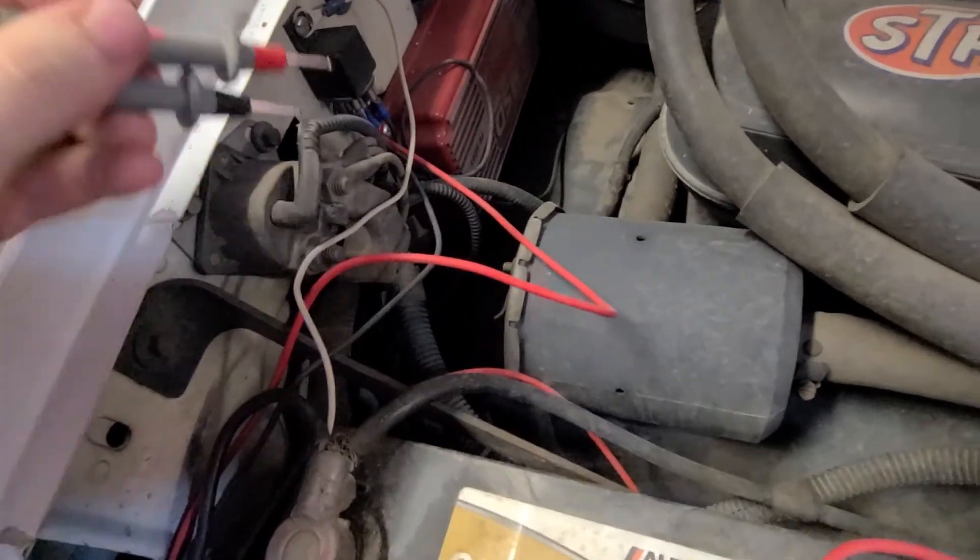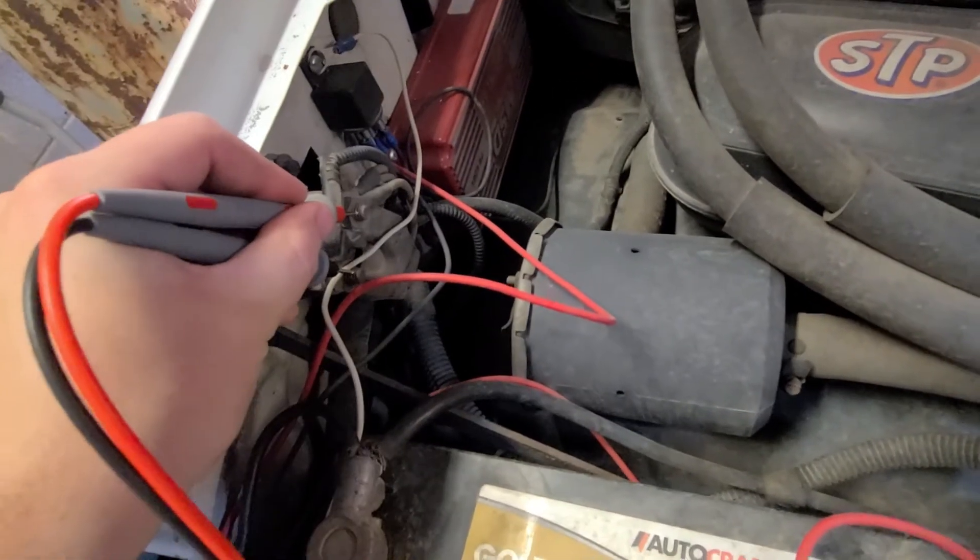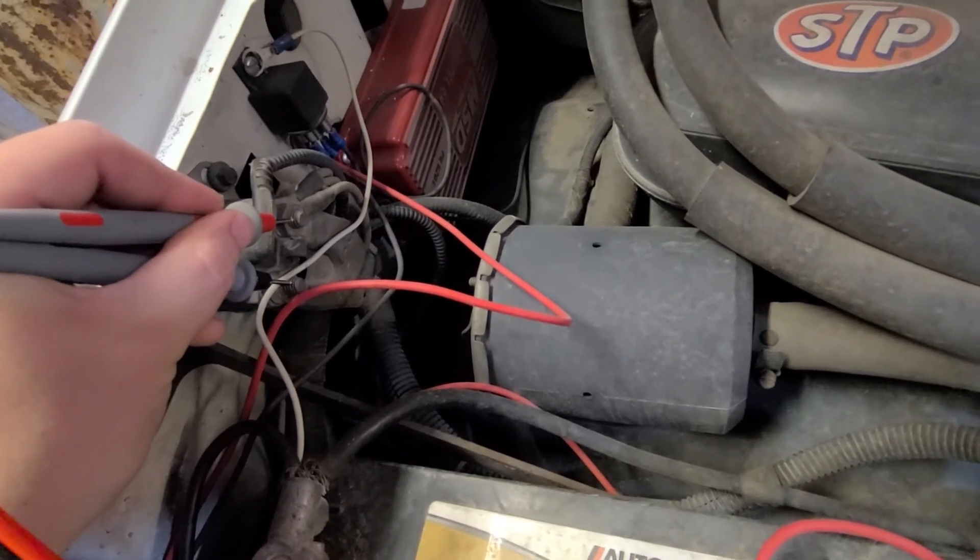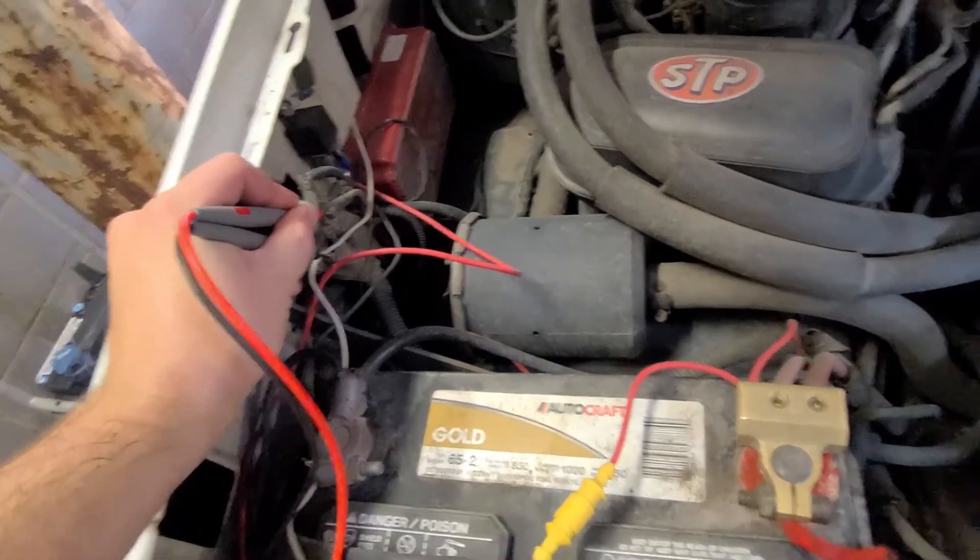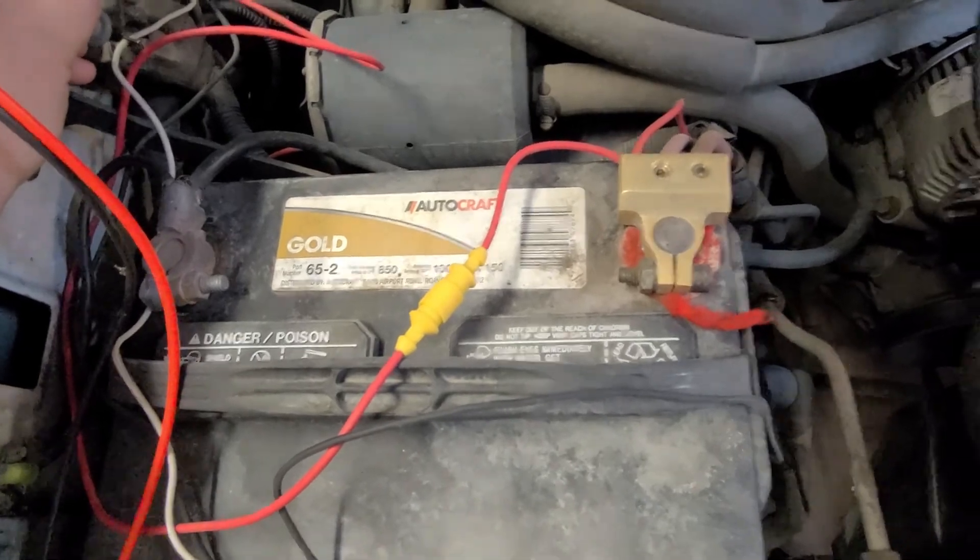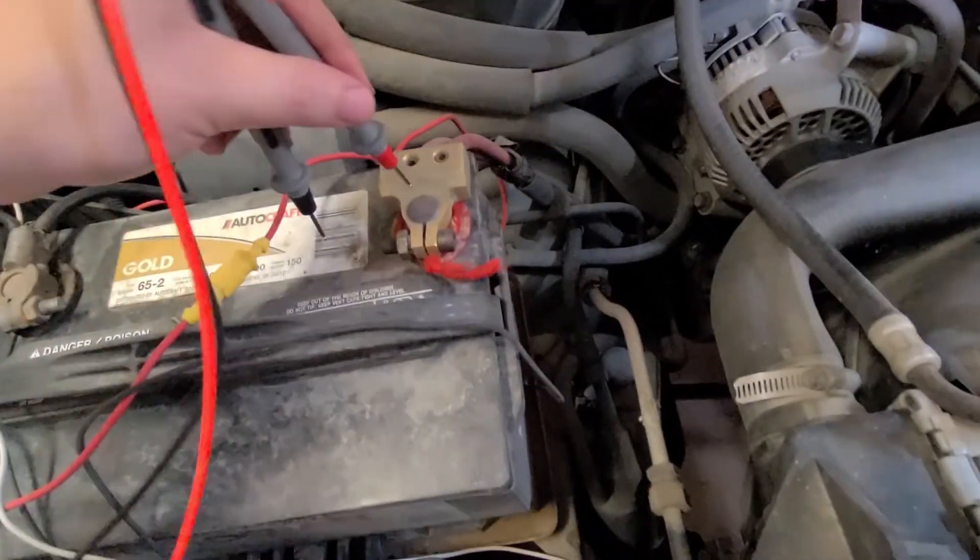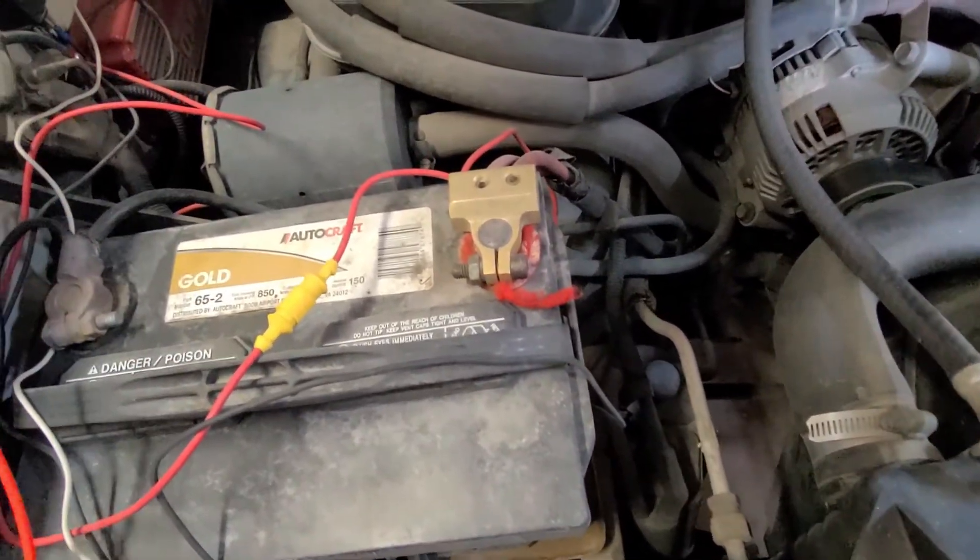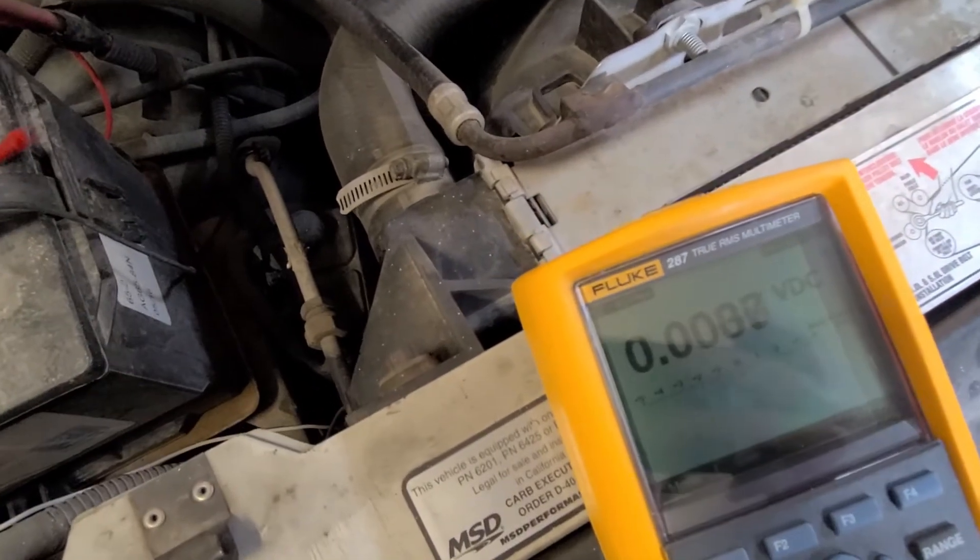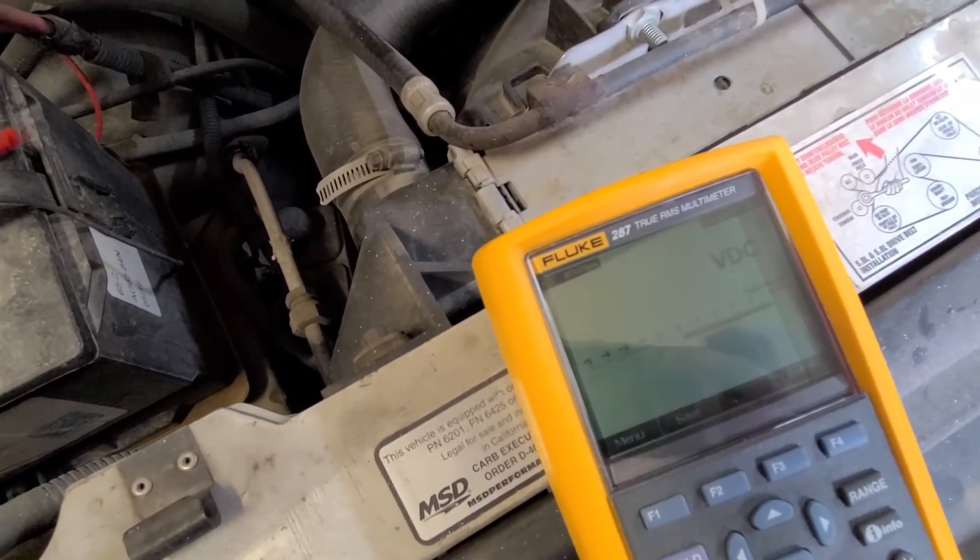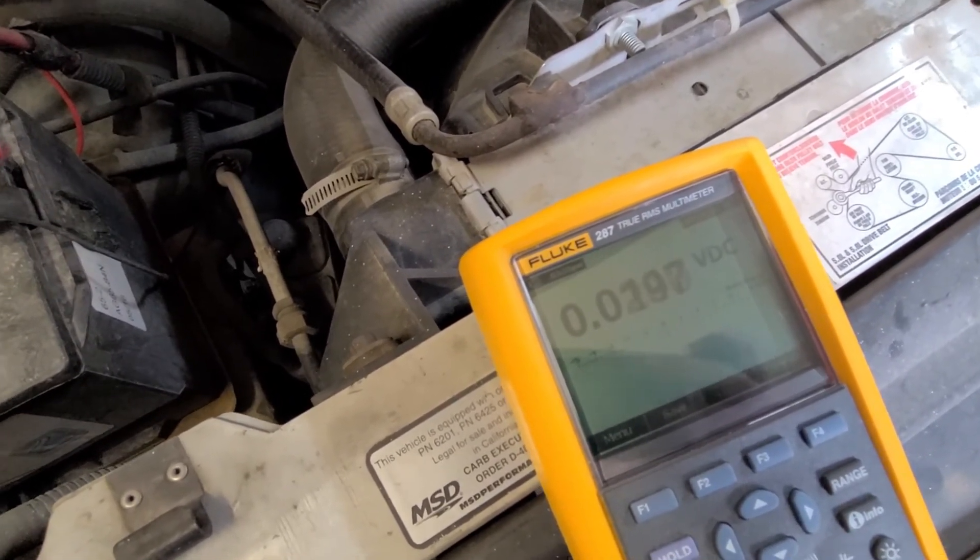We go across our starter solenoid here. If we're having issues starting the vehicle, or it's not starting rather, we can test across our starter solenoid. The one I have my negative probe on goes to the battery. The one I have my positive probe on goes to the starter. With the key in the off or run position, I should see the same voltage I would see across the negative and positive terminals on my battery, which I'm seeing here, 12.088. If I then had someone turn the key to the start position, I should see this voltage reading drop to near zero.